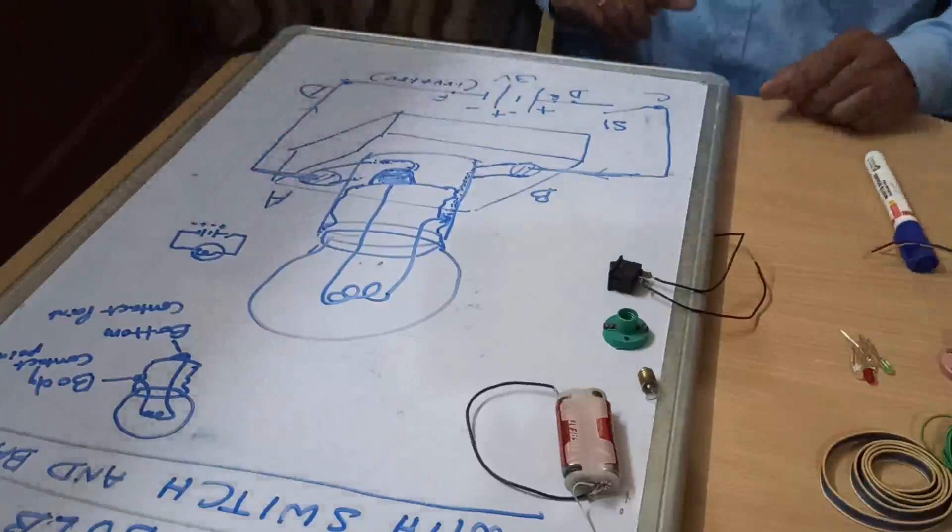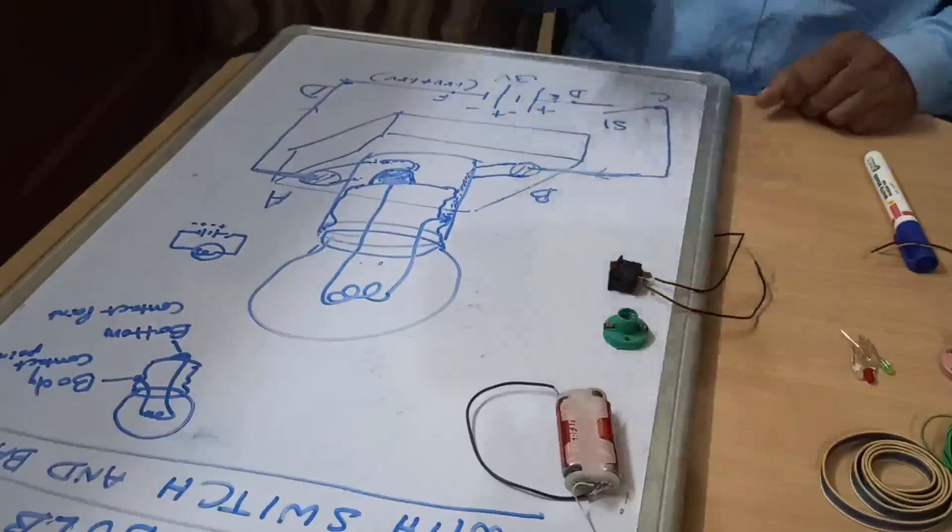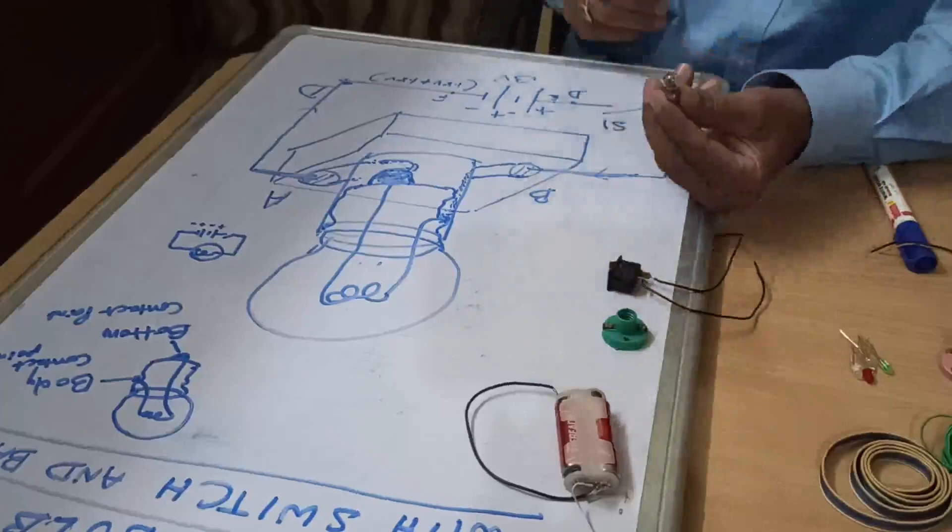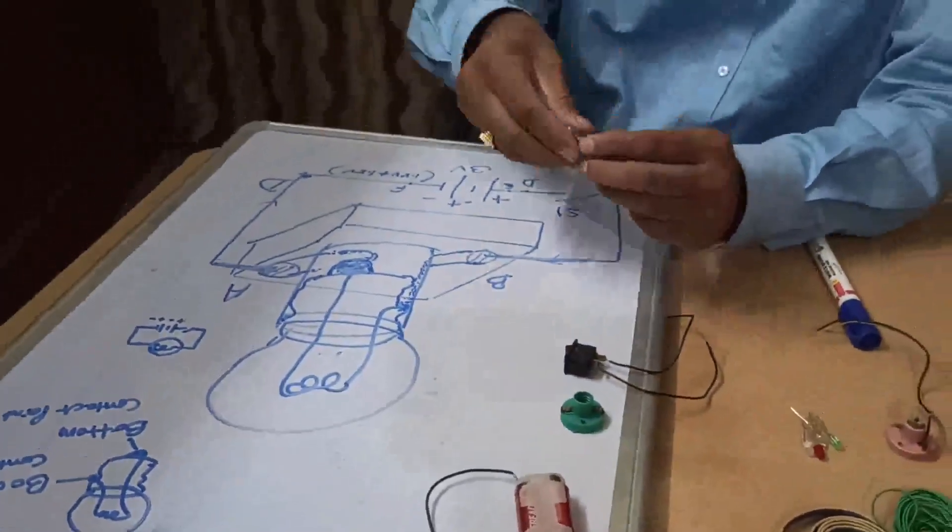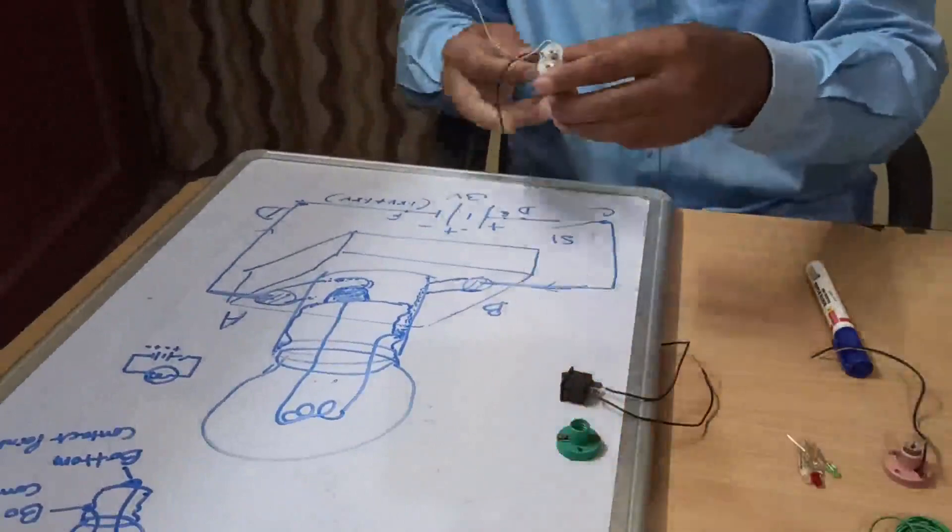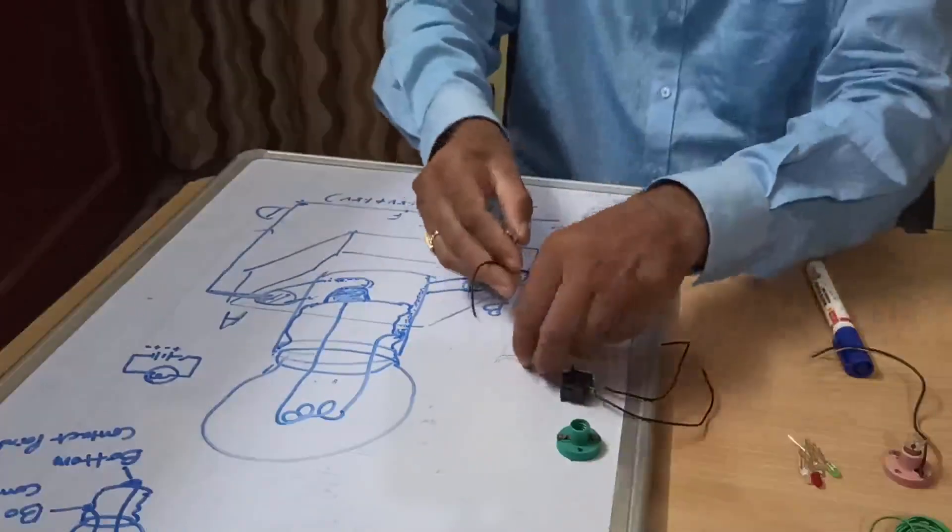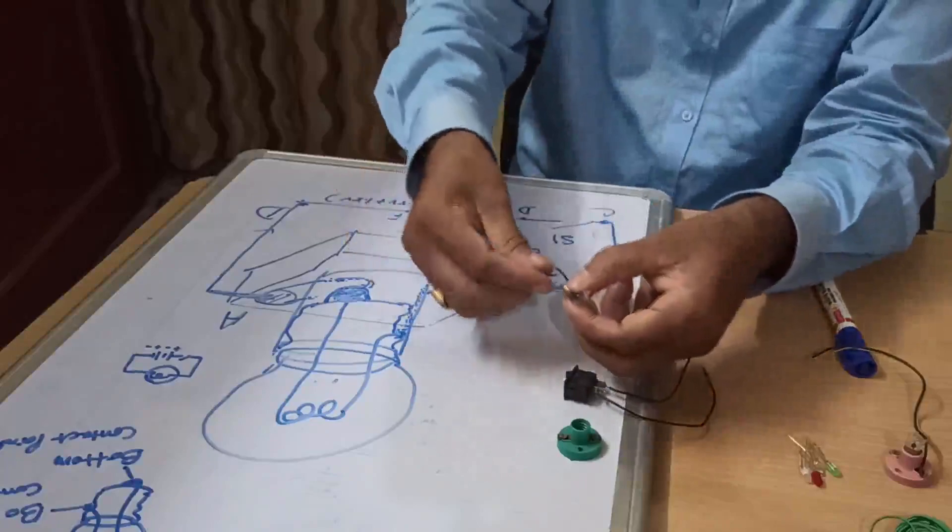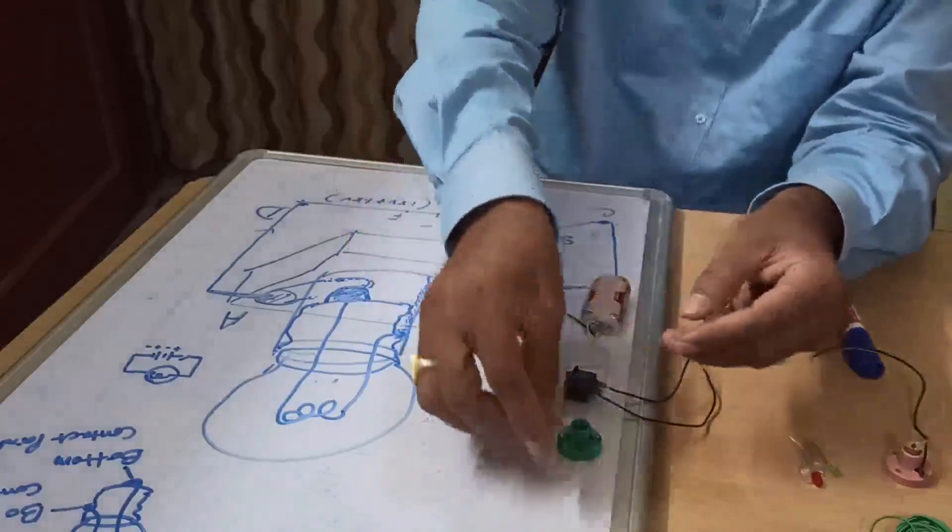Now see here, first what happens, now this bulb is connected with the holder. Before that let us test this one, whether it is working or not, always we should test it. So it is glowing, that means it is okay.